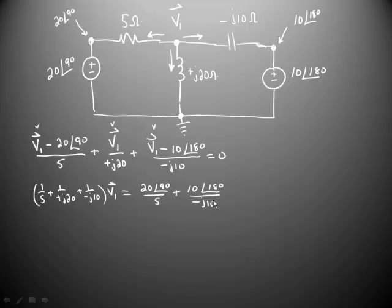Now it's just a matter of doing the complex arithmetic. There are some things that you can do that will make this a little bit simpler. You can convert the 10 at angle 180 into a minus 10, purely real. You can take the 20 at angle 90 and turn that into a plus J20, purely imaginary.